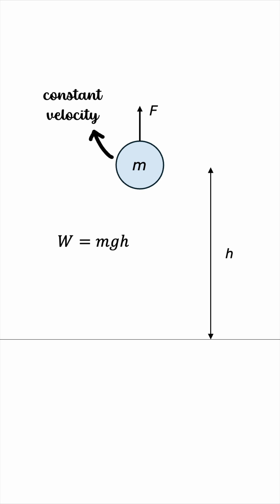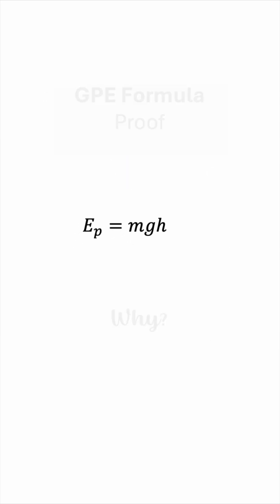then Mgh must be equal to the final potential energy of the ball, which means that the gravitational potential energy at any height is given by Mg times H.